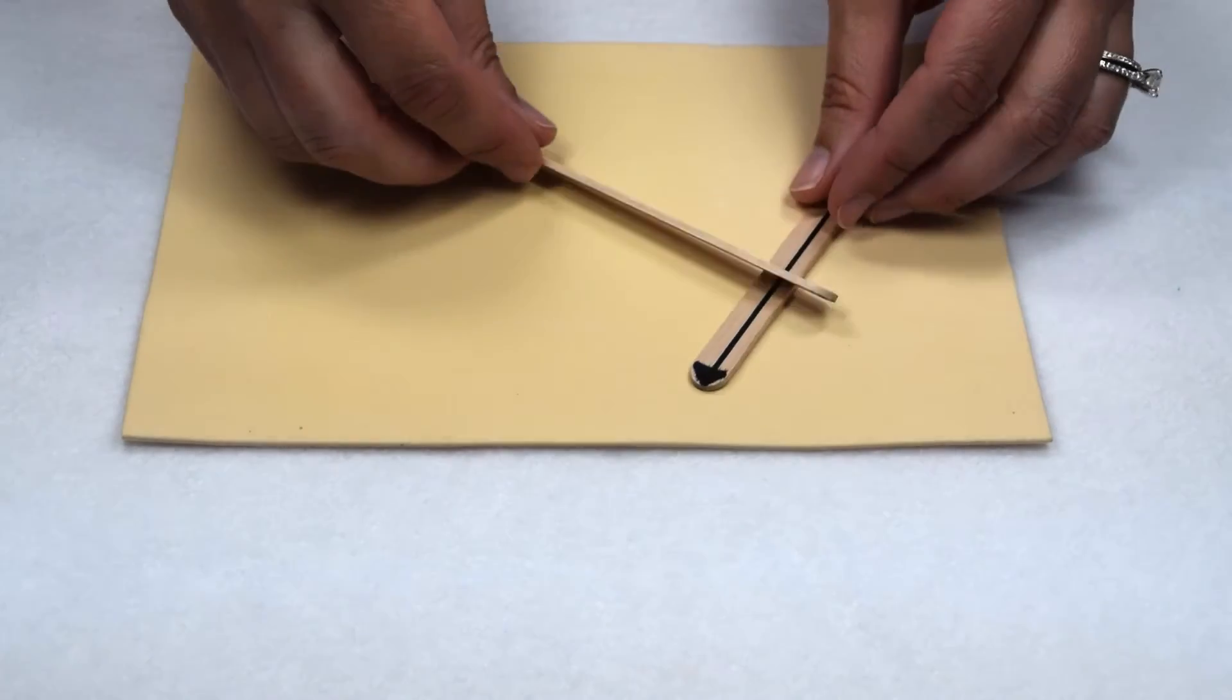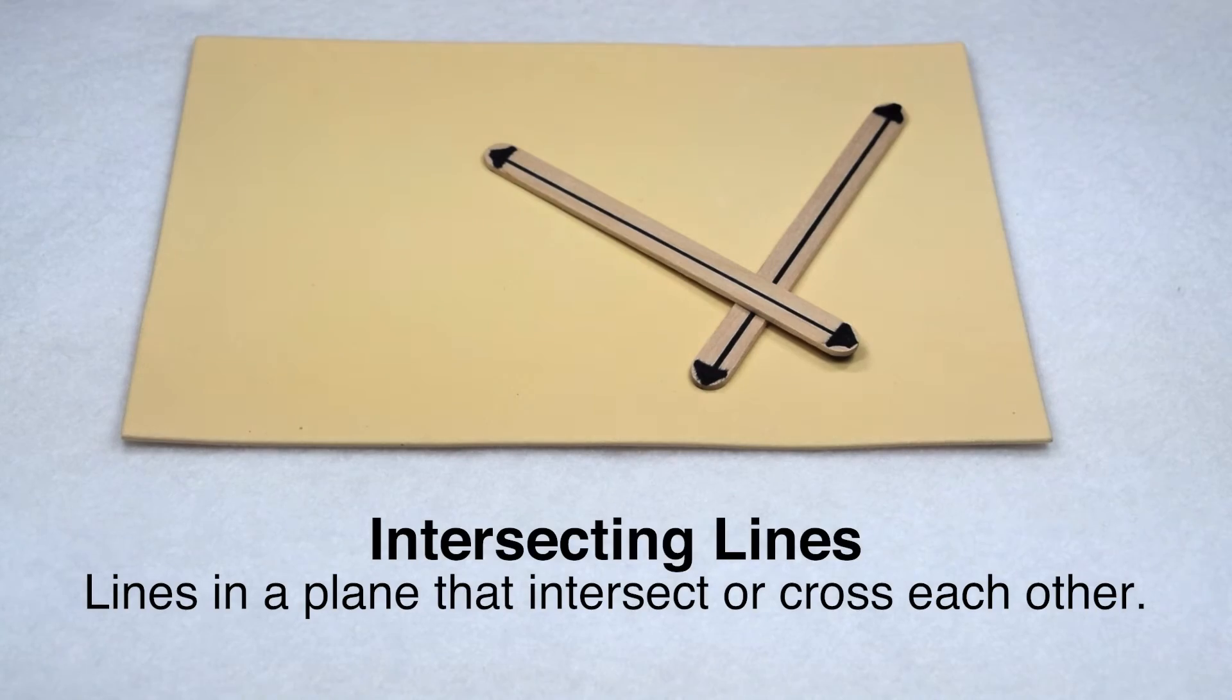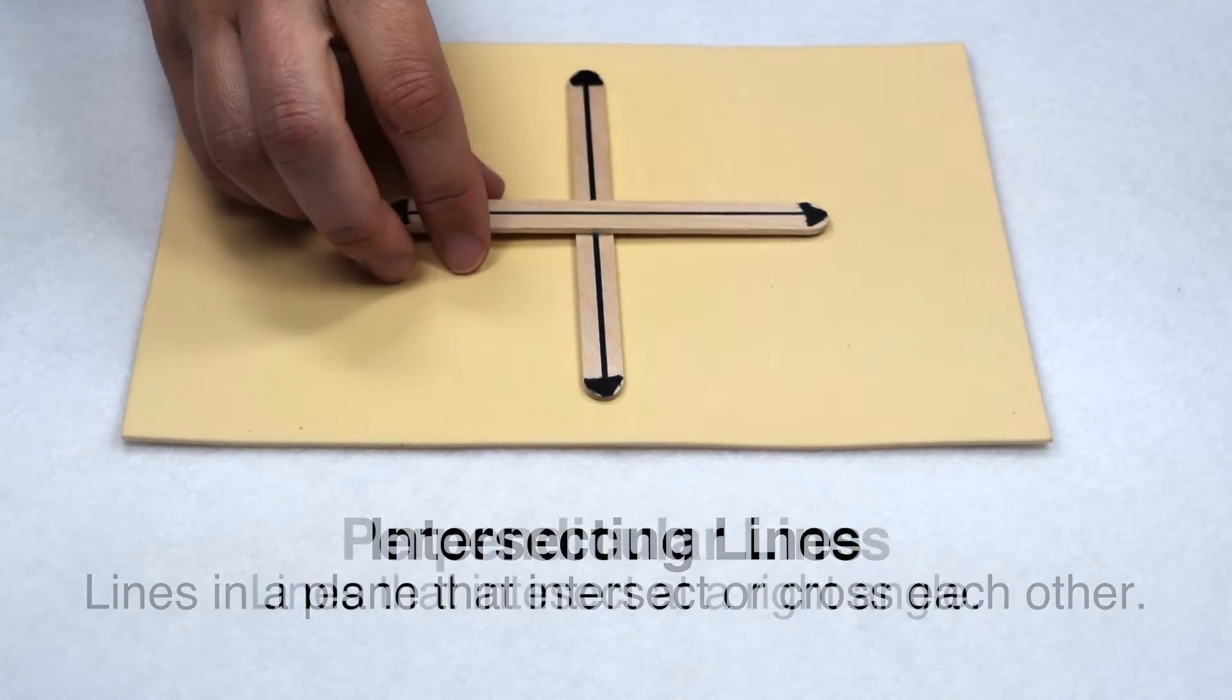But what happens when two lines do cross, touch, or intersect? Well, if it's simply two lines cross-touching or intersecting, those are intersecting lines. A specific set of intersecting lines that we spend a lot of time looking at are perpendicular lines.